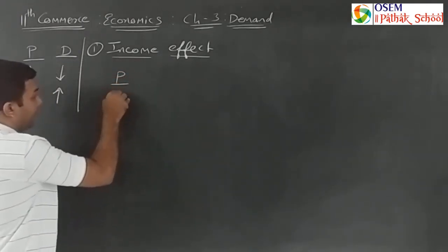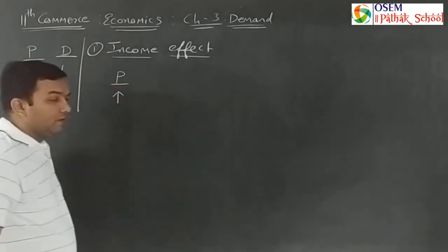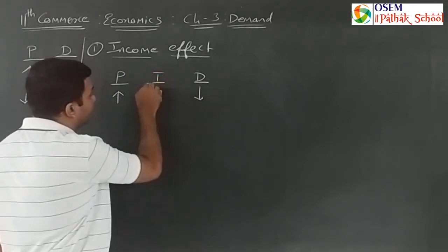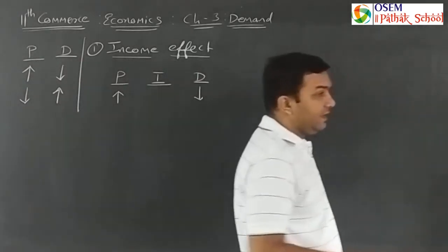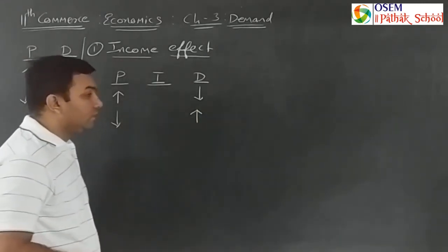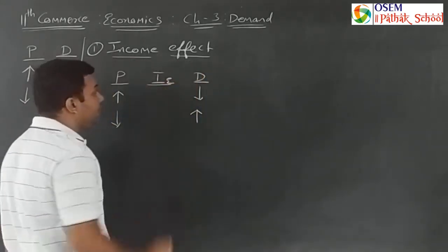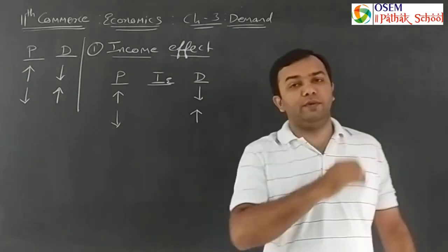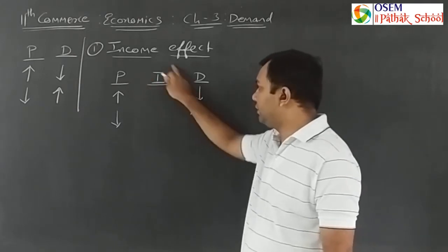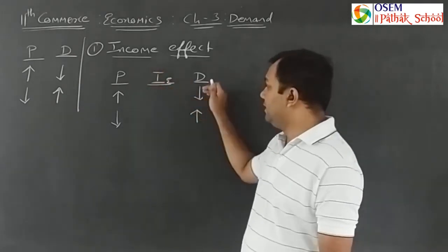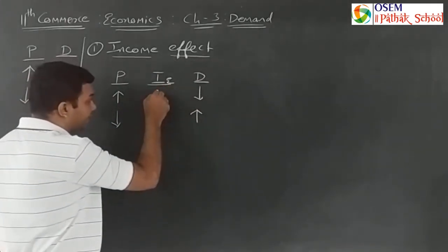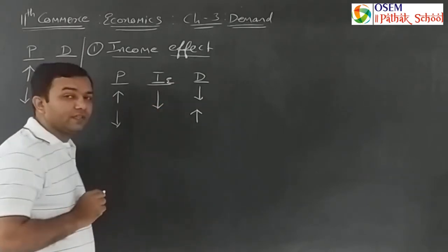When price increases, demand decreases — this is the income effect. In the reverse case, when price decreases, demand increases. In simple terms, when price increases and a person's income remains constant, their real purchasing power is diminished, so demand decreases.